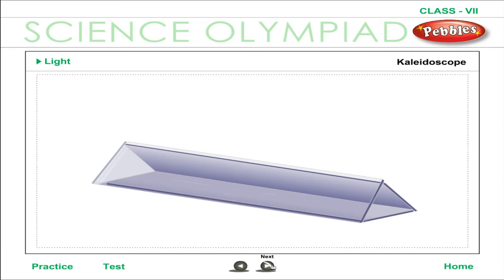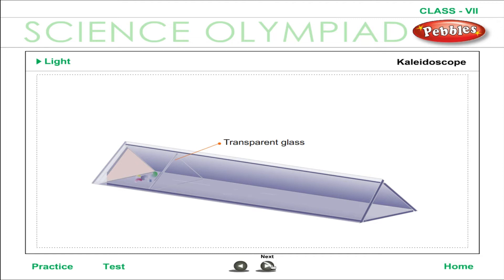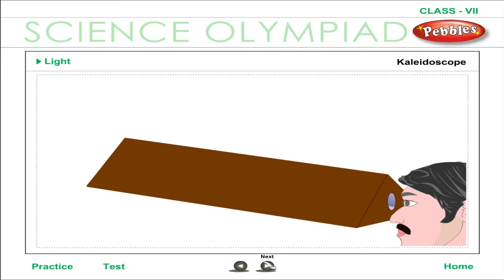The principle of multiple images by reflection from inclined mirrors is used in a kaleidoscope. It consists of a cardboard tube fitted with three long narrow plane mirrors M1, M2 inclined at 60 degrees to one another. One end is closed with two circular glass plates — the outer one of ground glass and the inner one of transparent glass — with colored glass pieces between them. When held against a bright background, colorful hexagonal patterns are seen, and new patterns form as the tube is rotated.